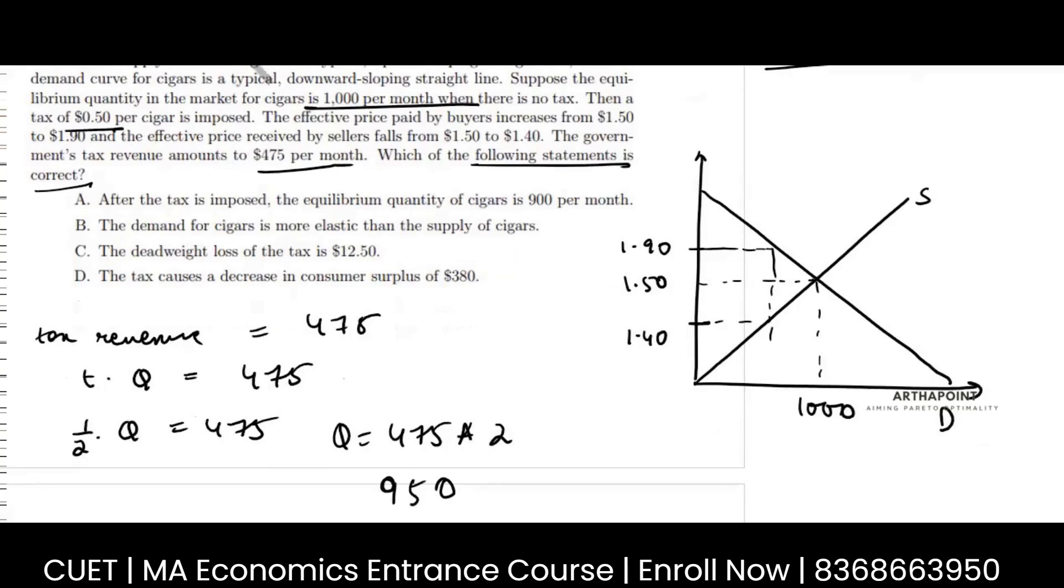So this will be 950. So the first statement is incorrect.